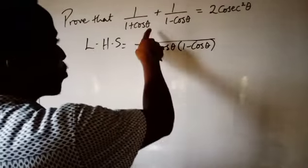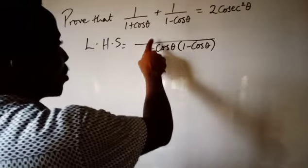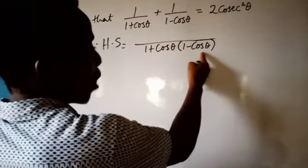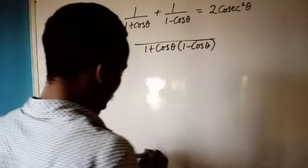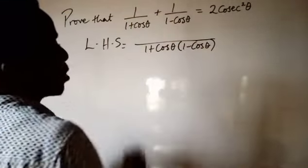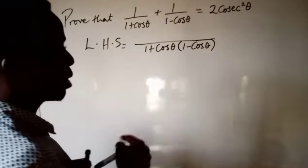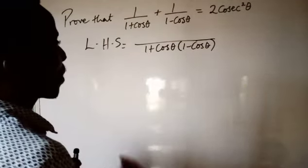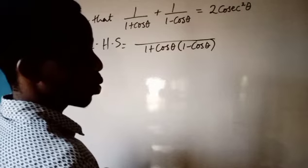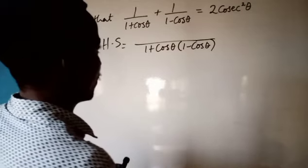1 plus cos theta divided by 1 plus cos theta — this cancels out, so we are left with 1 minus cos theta. So 1 minus cos theta multiplied by 1, we are still left with 1 minus cos theta.